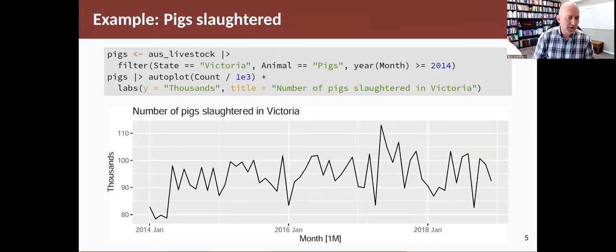Let's take a real set of data and have a look. I'm taking a small set from the dataset AusLivestock, the number of livestock killed in different months. We're looking at the data on pig slaughters, the number of pigs slaughtered each month in the state of Victoria since 2014 to the end of 2018.